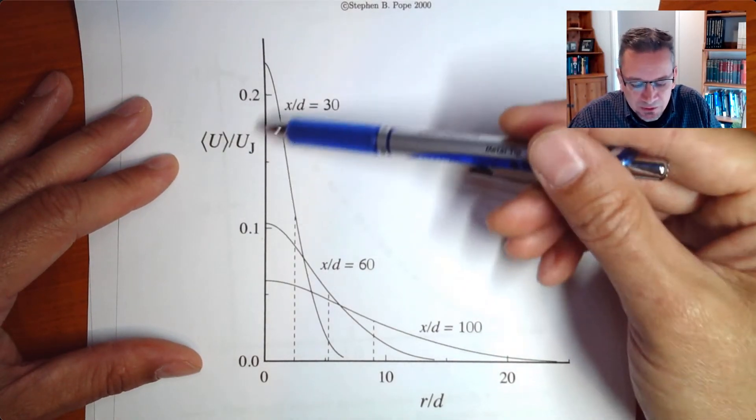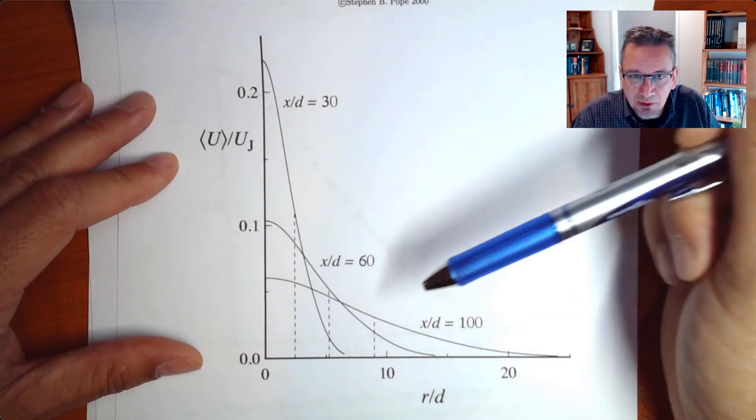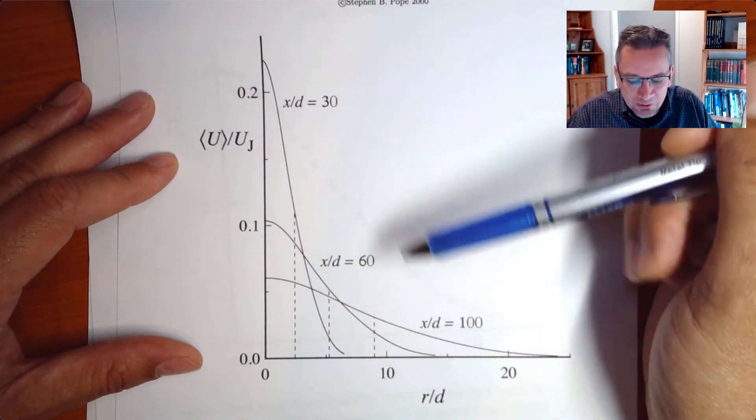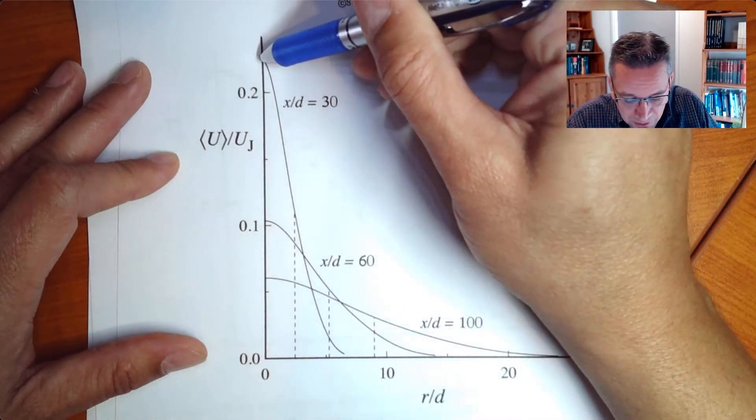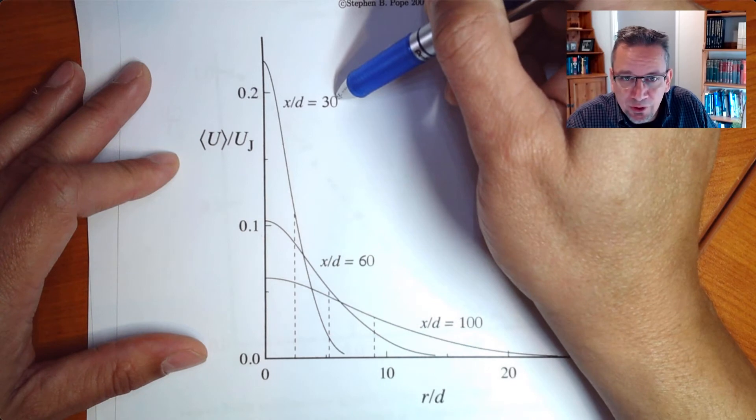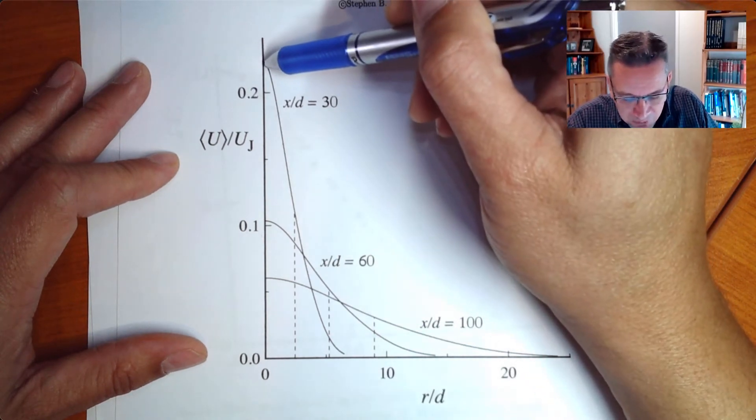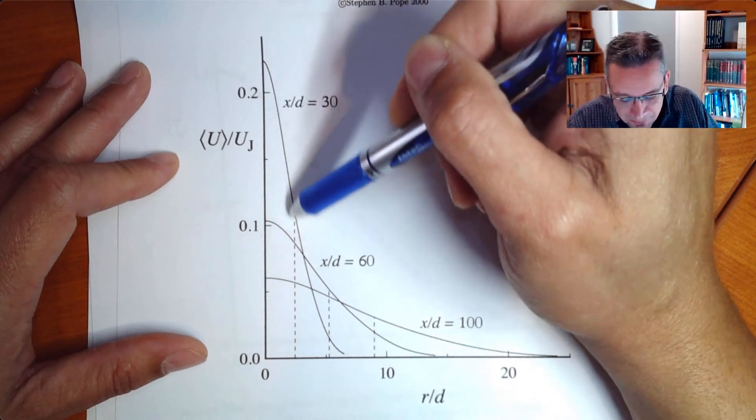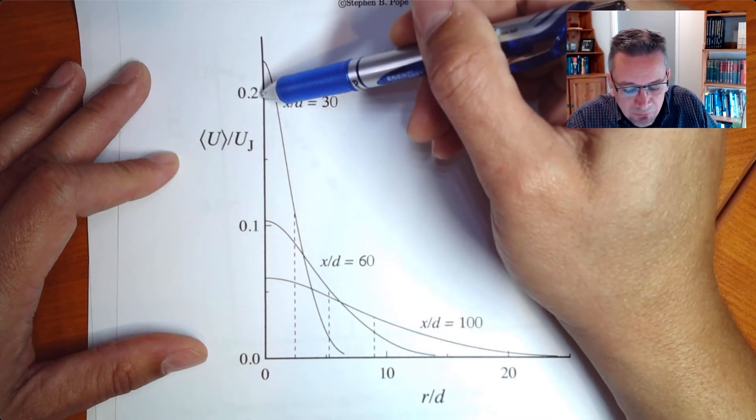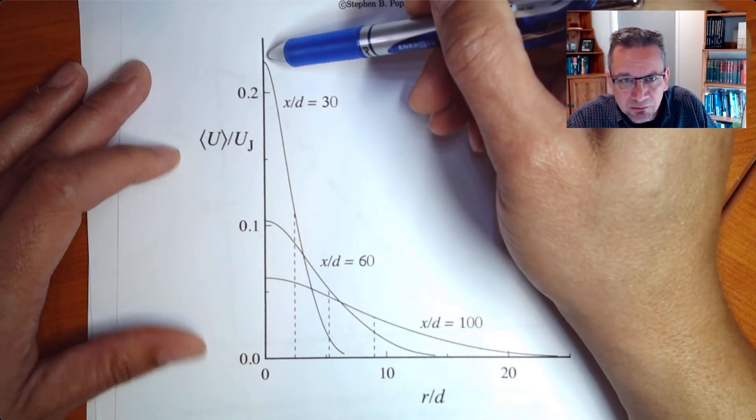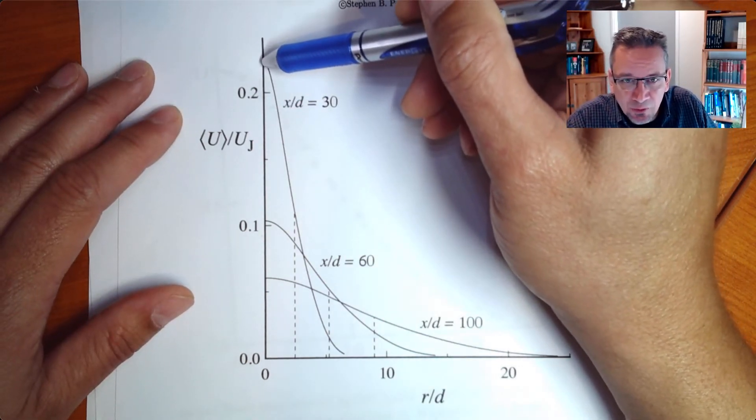But they are quite useful just to get a good first idea of the flow field. So you have here, you see at x over d equals 30, the first flow field, the first measurement. And you see you have here a centerline velocity that's a little bit higher than 20 percent of the jet velocity at this point.